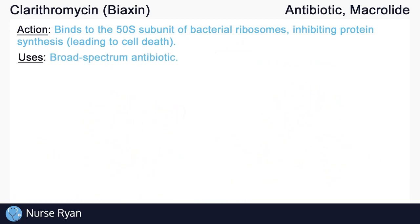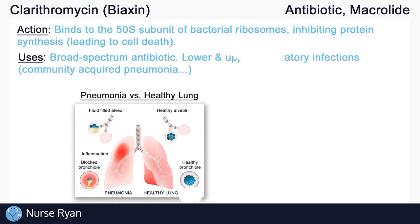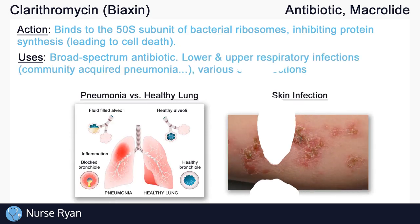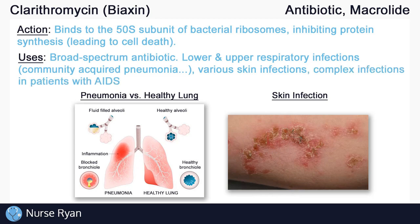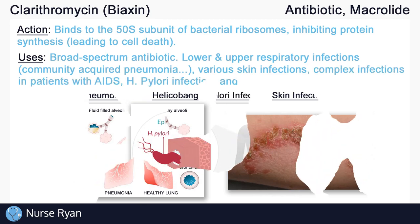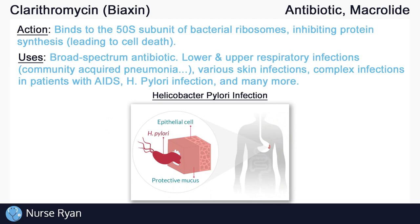Clarithromycin is a broad-spectrum antibiotic, which means that it can act on a wide variety of bacterial infections. It can be used to treat both lower and upper respiratory infections, including community-acquired pneumonia, various skin infections, complex infections in patients with AIDS, H. pylori infection, and more. Clarithromycin can treat many different gram-positive and gram-negative susceptible bacteria, which is why it is considered a broad-spectrum antibiotic.